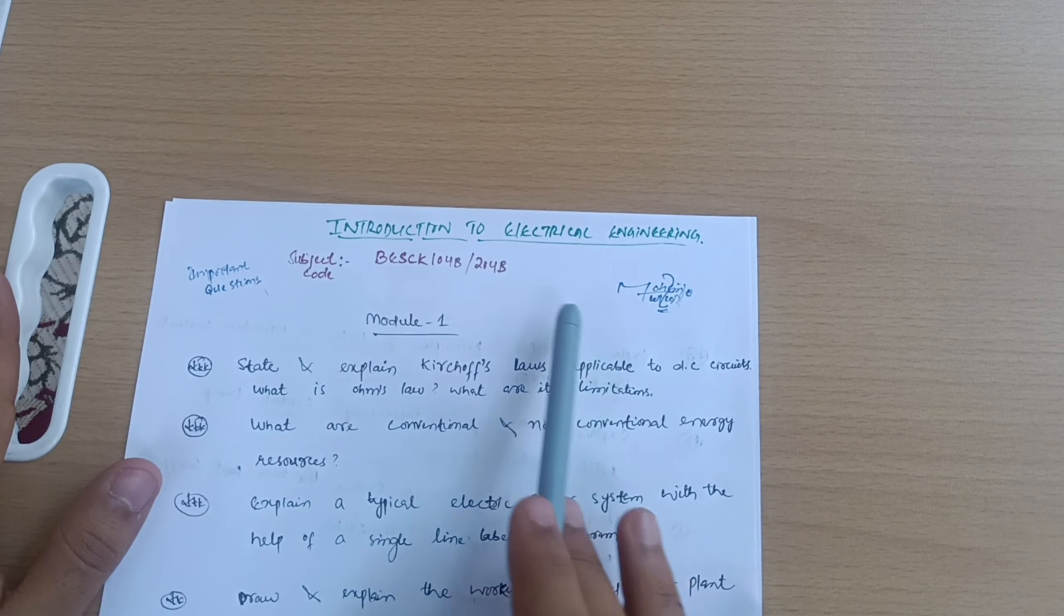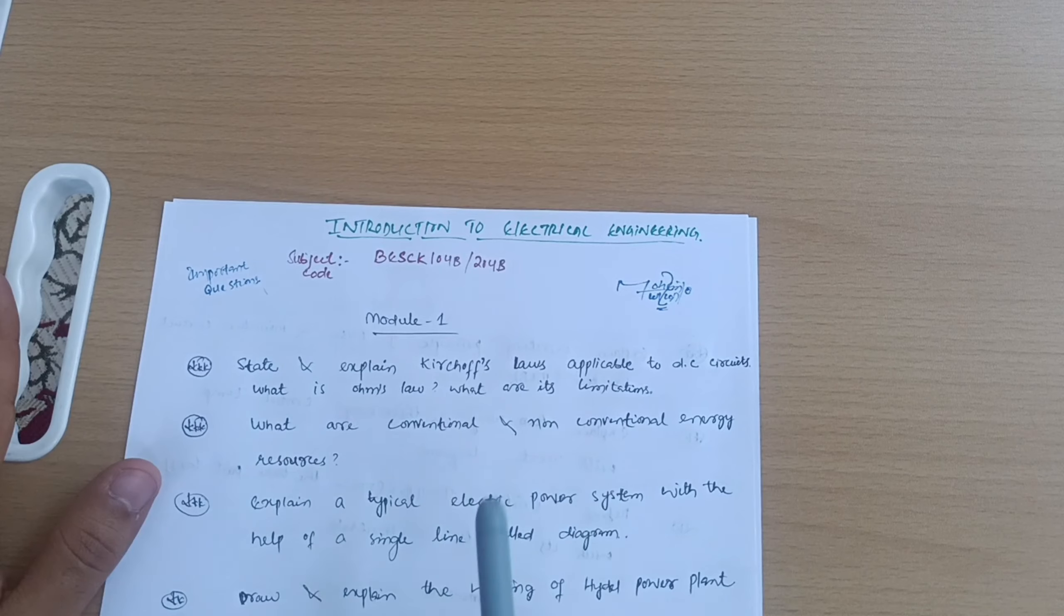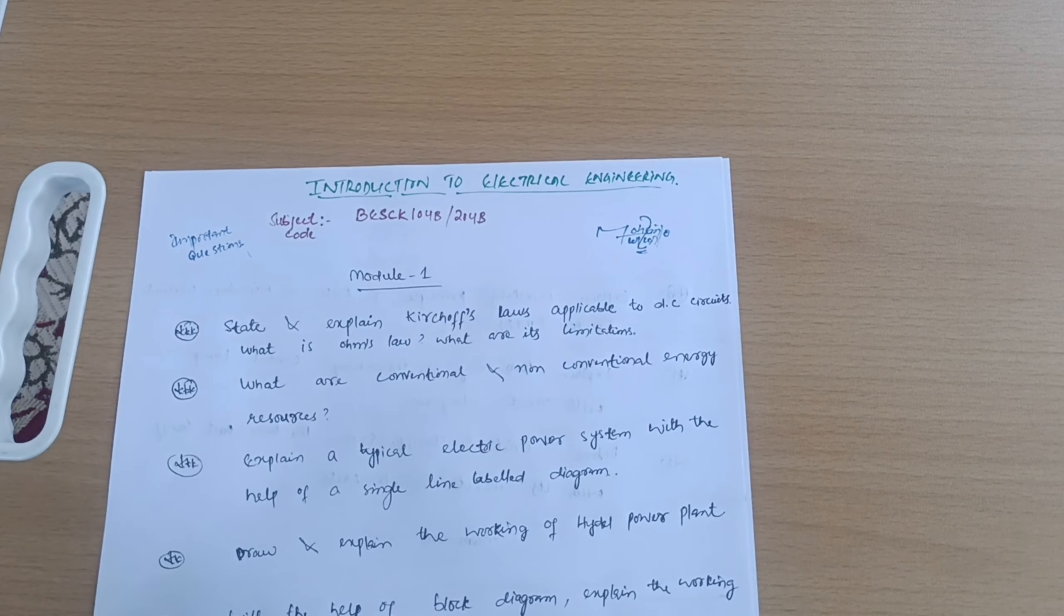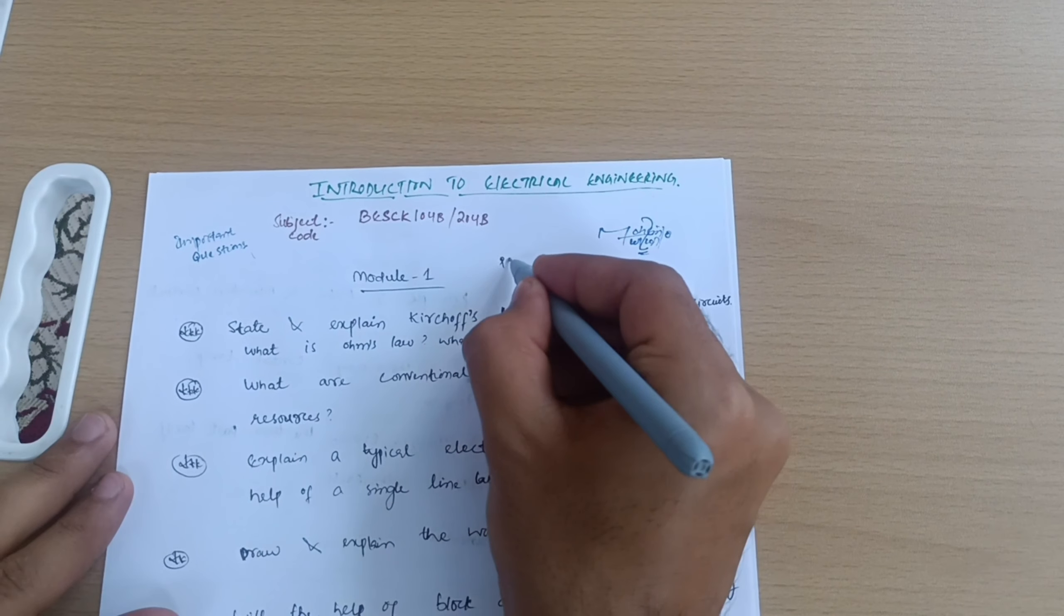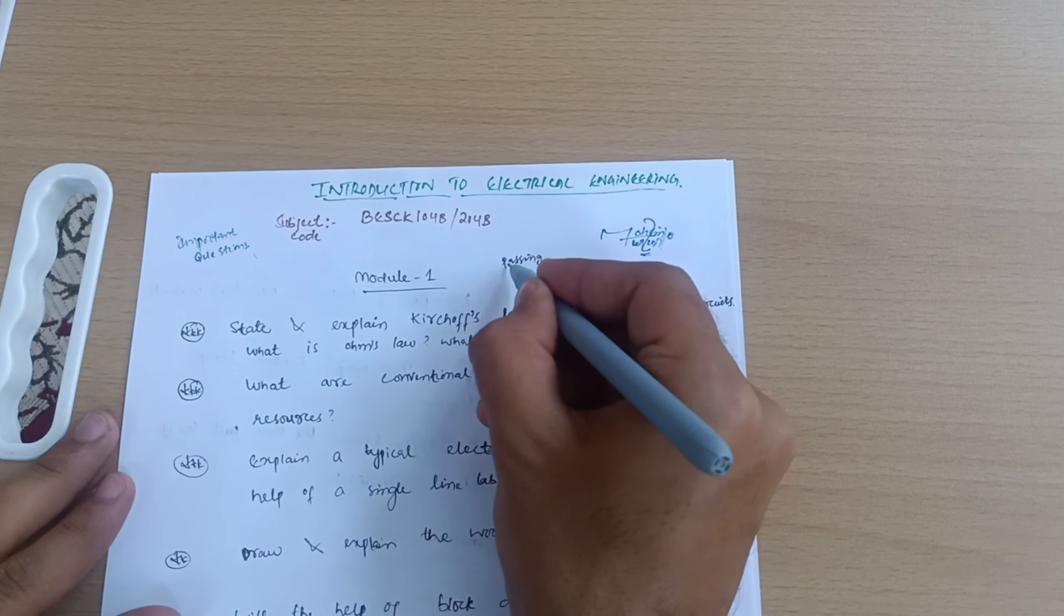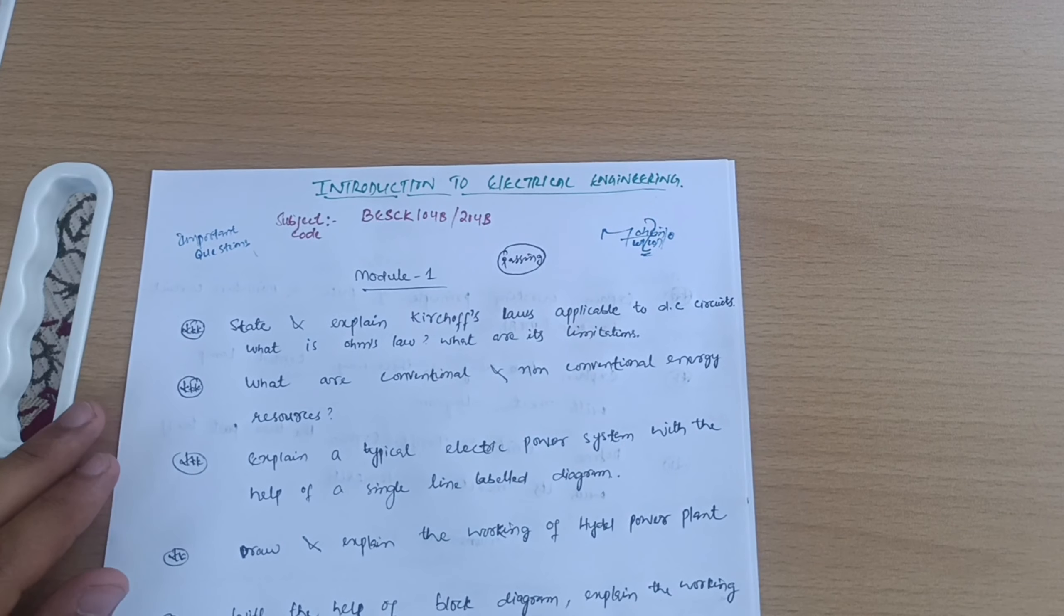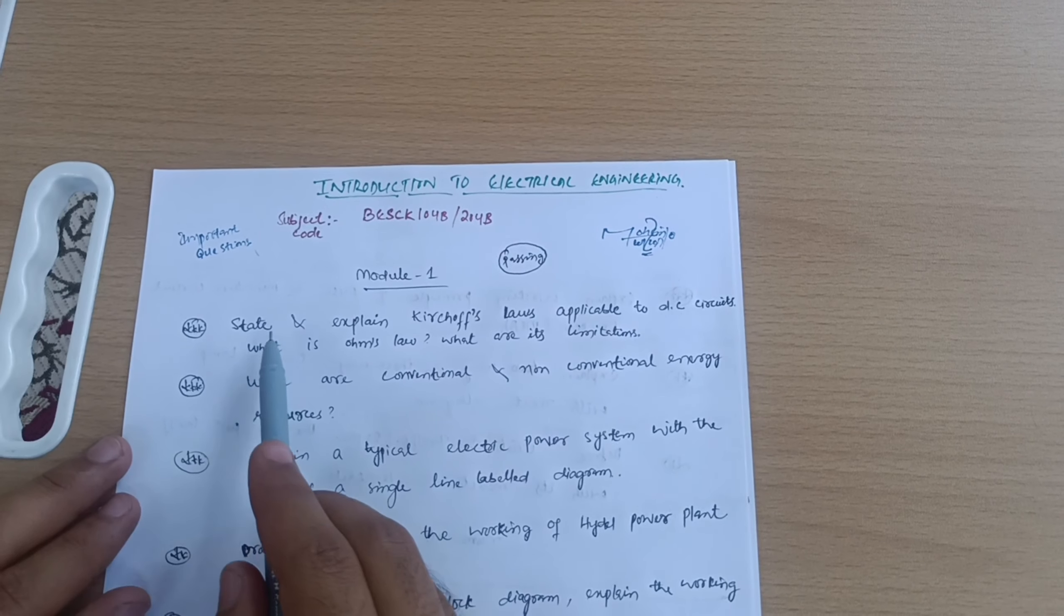Let me discuss the first passing module, which is Module 1. It is a passing module, means you have to go through the theoretical concepts I will mention here. Numericals are also simpler ones you should go through.